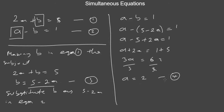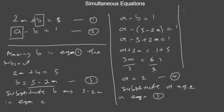The next step is to substitute a as 2 into equation 3. We take equation 3 which is b equals 5 minus 2a, then replace a with 2. That gives b equals 5 minus 4, so b equals 1. Therefore, a equals 2 and b equals 1. This is how we solve this particular simultaneous equation using the substitution method.